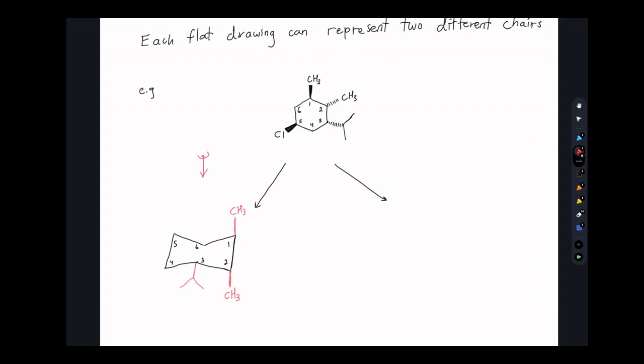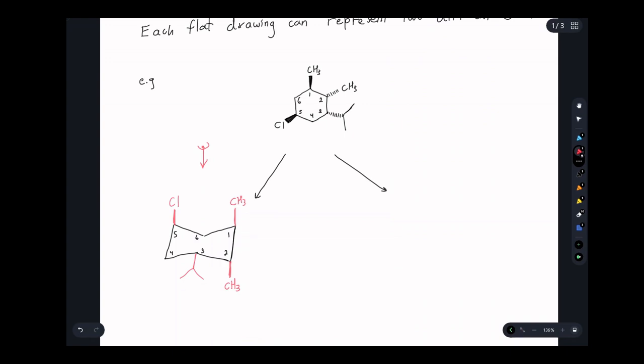Now for our last substituent, we'll look at number five. We see the chlorine is on a wedge coming towards us, and that's going to be on an up carbon here. So we can add the chlorine axially. And so what we have here is two axial methyl groups, an axial chlorine, and an equatorial isopropyl group. So that's great. That looks and matches what our ring is, but take a look at this structure.